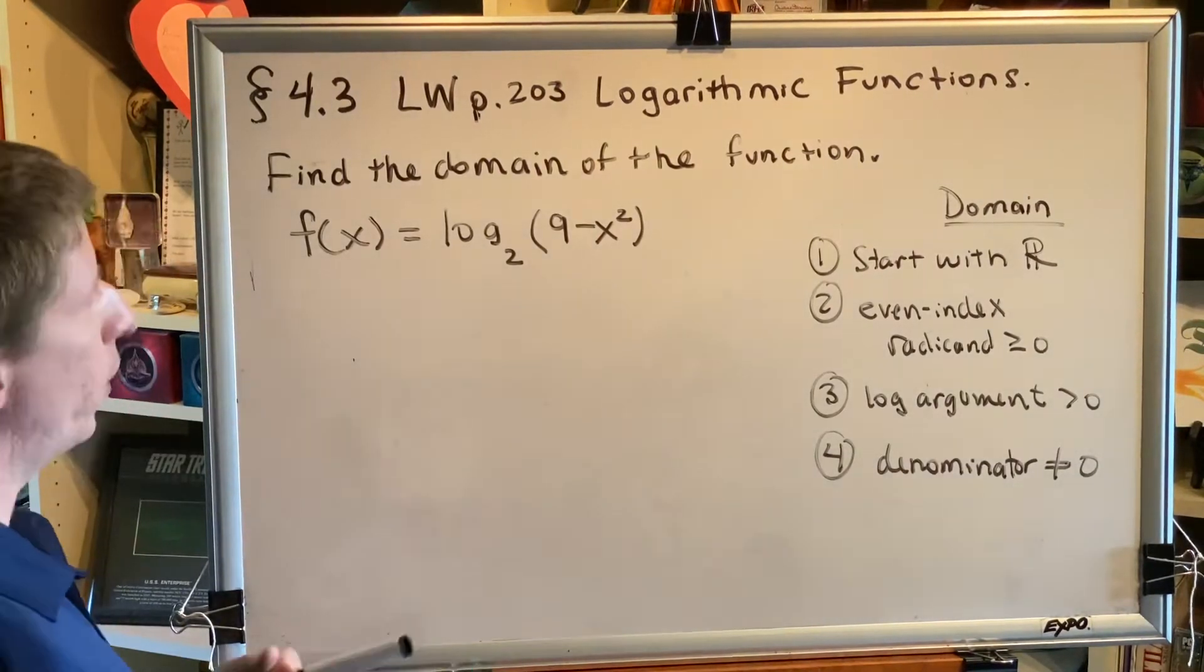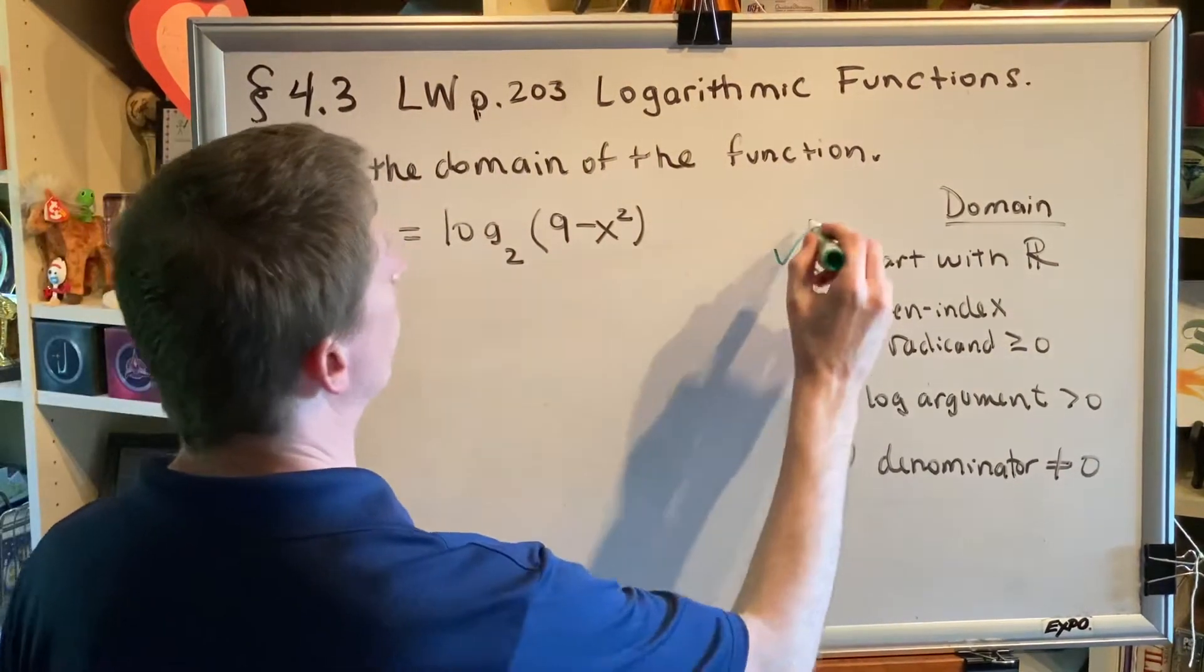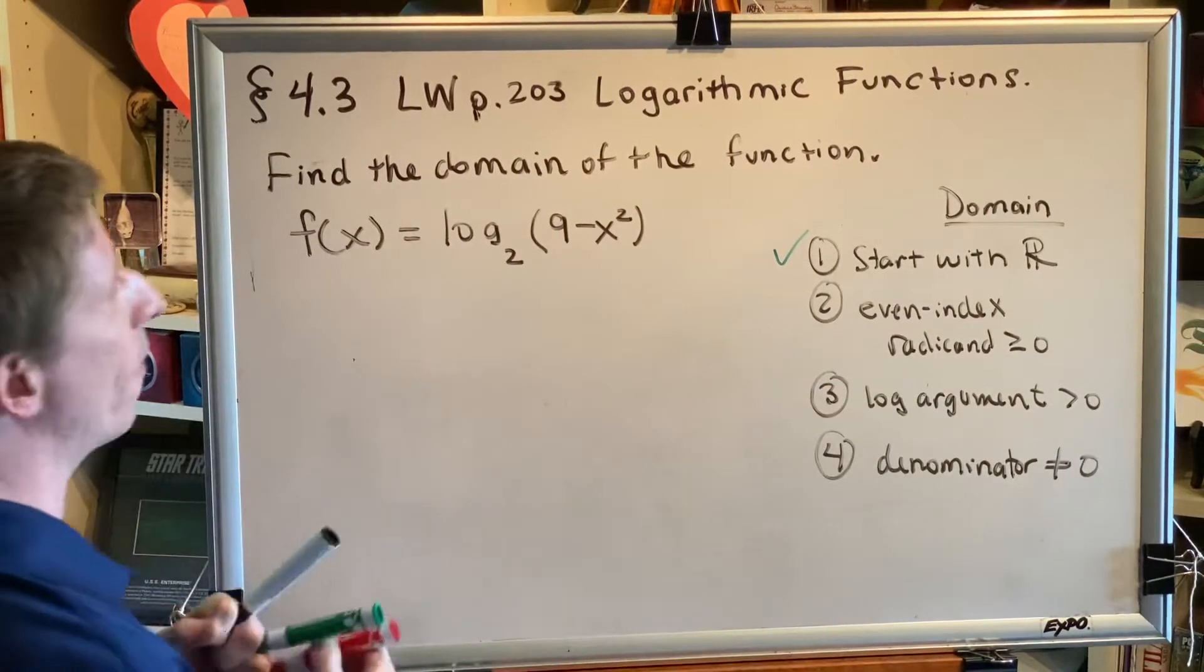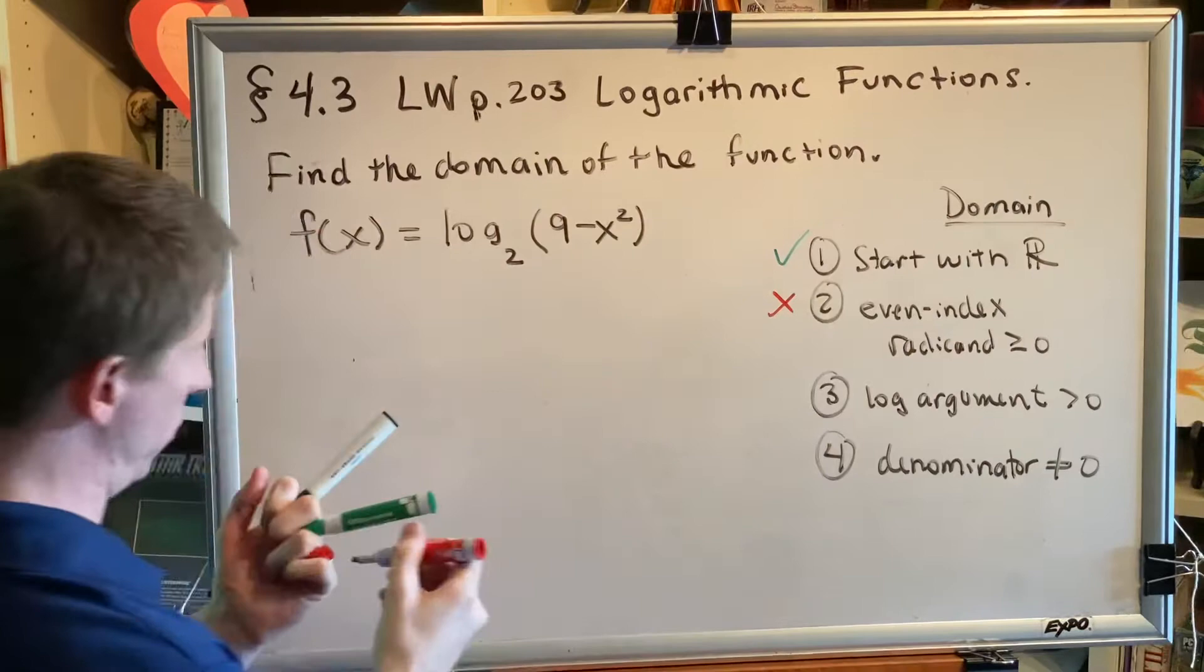Alright, let's go through the four steps. First, we will start with all real numbers. Next, we will look for even index radicals. We don't have any in this problem, so we skip step two.